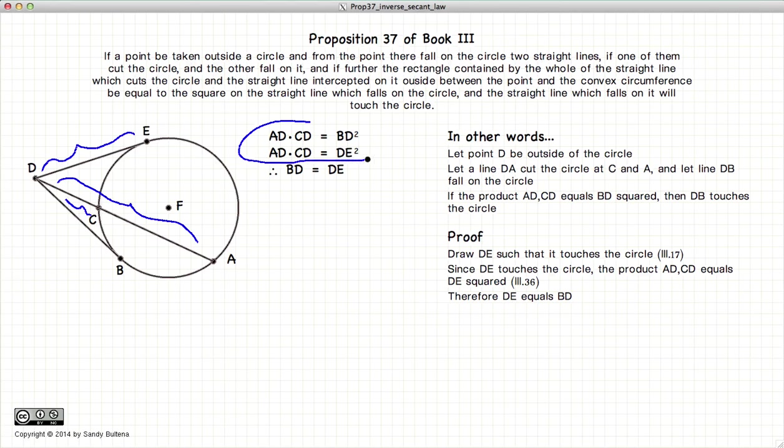If we look at these two equations, it's clear that DB squared is equal to DE squared, or that BD is equal to DE. So now we have DE is equal to DB.